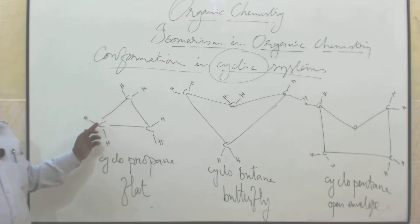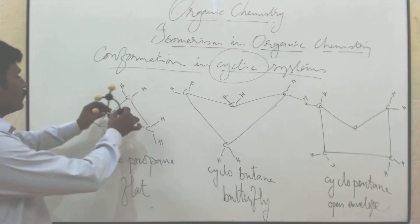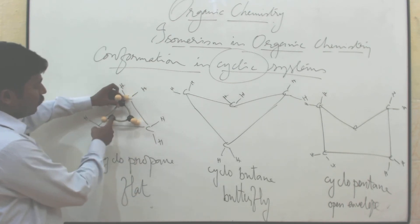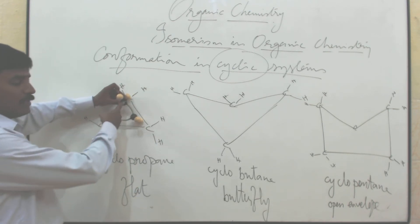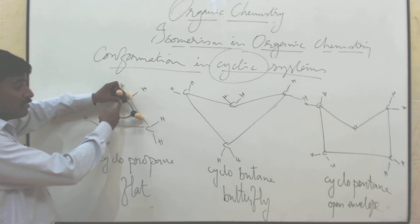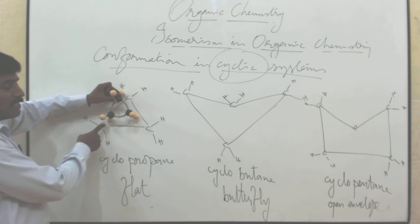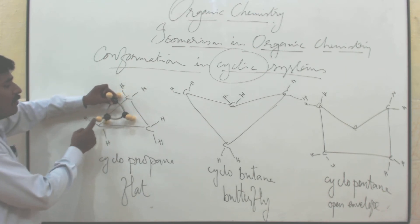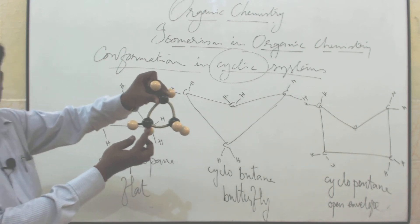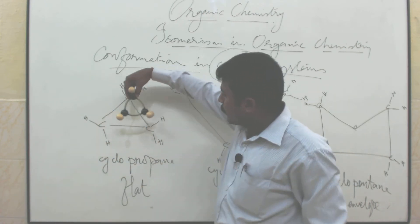This is cyclopropane. The minimum unit is 3 carbons to make one cycle. See here — cyclopropane: first carbon, second carbon, third carbon. Each and every carbon is bonded with a C single bond C — a strong sigma covalent bond. Each carbon is bonded with 2 hydrogen atoms — this is cyclopropane.